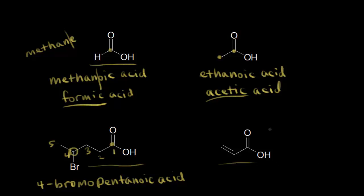Let's look at this one — three carbons, so carbon one, two, and three. A three-carbon carboxylic acid would be propanoic acid, but since we have a double bond present, we need to change the A to an E, making it propenoic acid. We put in a two to indicate the start of the double bond, so 2-propenoic acid. We don't have to worry about stereochemistry here since it's a monosubstituted double bond, but for longer carboxylic acids you would need to consider it.